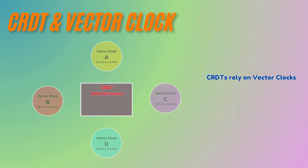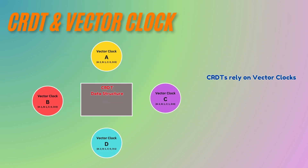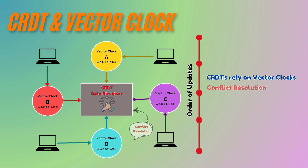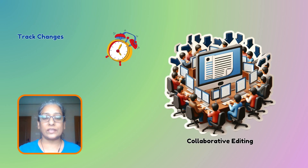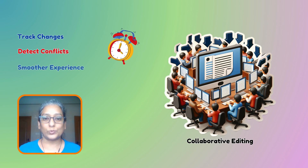In a previous video we talked about how CRDTs handle conflicts in collaborative editing, like in Google Docs. CRDTs rely on specialized data structures and algorithms to manage these conflicts. One such data structure is vector clocks. Vector clocks track changes and detect conflicts, making collaborative editing a smoother experience. First, let's look at how traditional systems try to resolve conflicts.